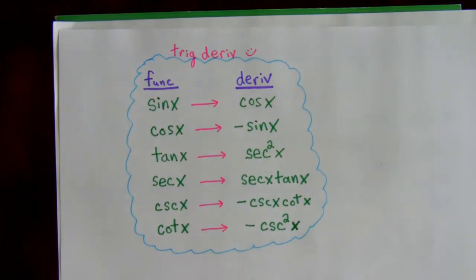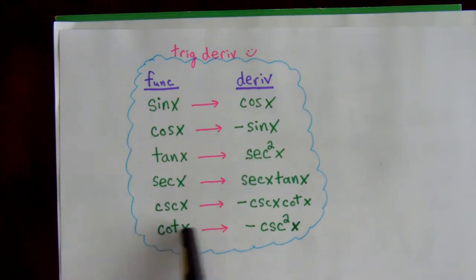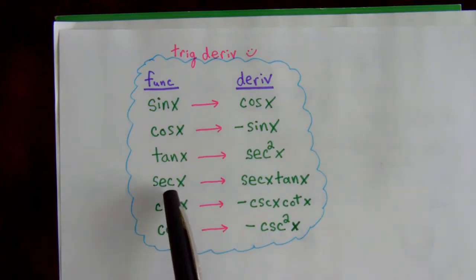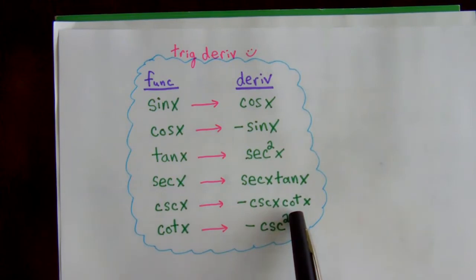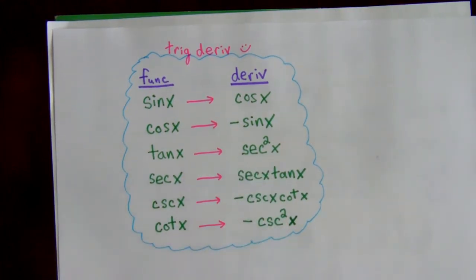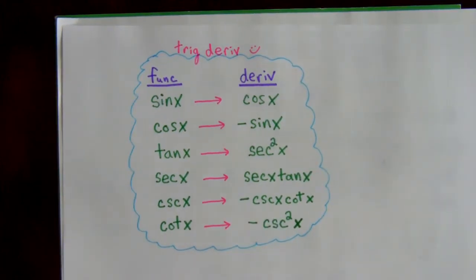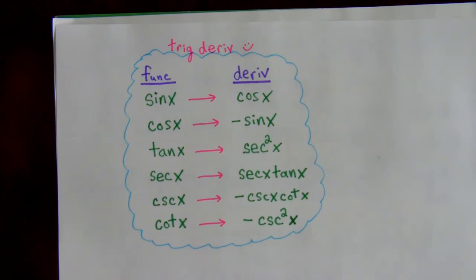A memory shortcut: the 'co' derivatives — cosine, cosecant, cotangent — are the ones with the negative sign. Also, the derivative of secant is secant tangent; for cosecant, you add the negative and use cotangent instead of tangent. The derivative of tangent is secant squared; for cotangent, add the negative and use cosecant squared. Make note cards of these, tape them to your mirror, and study them every time you brush your teeth — that's how you get those trig derivatives memorized.